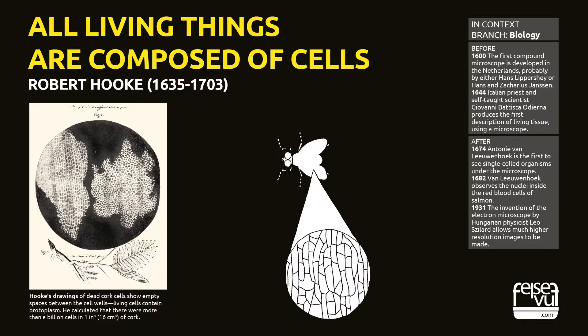Hooke's drawings of dead cork cells show empty spaces between the cell walls; living cells contain protoplasm. He calculated that there were more than a billion cells in one inch cubed — 16 cubic centimeters — of cork.